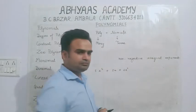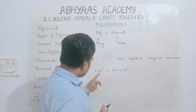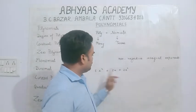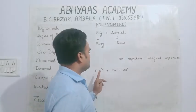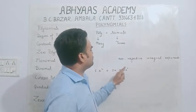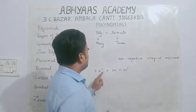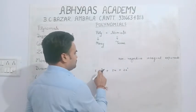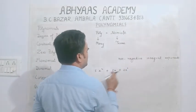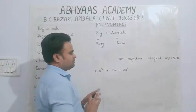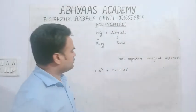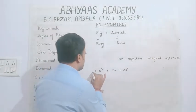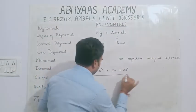यह power नहीं होनी चाहिए। और दूसरी चीज, जो भी power आपको दिख रही है, वो सारी की सारी integral form में होनी चाहिए। plus 2, plus 1, 0 — यह ठीक है, लेकिन 1/2, 1/3, 4/3, 4/5 के form में कोई भी power नहीं होनी चाहिए। इसका मतलब इसको polynomial बोल सकते हैं।